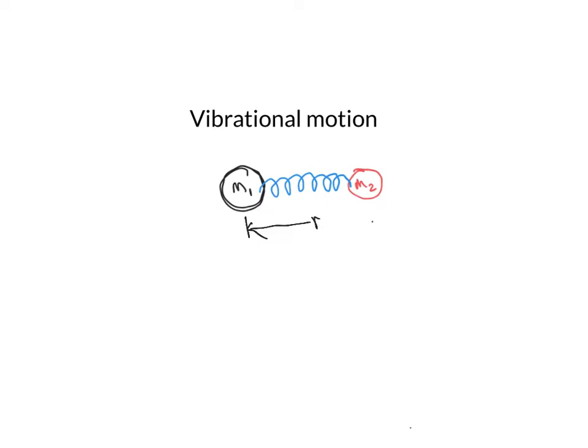Notice that the variable that changes when we do this motion is the distance between the two particles. So if we place our molecule so that its center of mass is at the origin, and we'll talk about what we mean by center of mass.